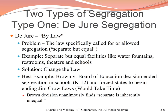There are basically two types of segregation. The first type is known as de jure, or by law. The problem with de jure segregation is that the law specifically called for or allowed the segregation of the races — for instance, Jim Crow laws that allowed for separate but equal facilities like water fountains, restrooms, theaters, and schools. The solution to de jure segregation is simply to force the law to be changed. The best example is Brown v. Board of Education, which ended segregation in K-12 schools and forced states to begin ending Jim Crow laws, which would take time.